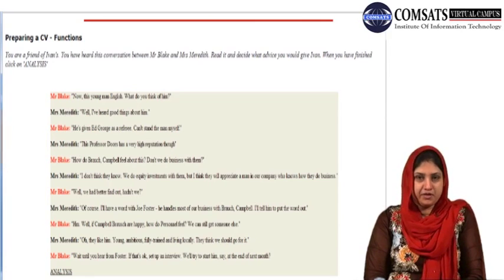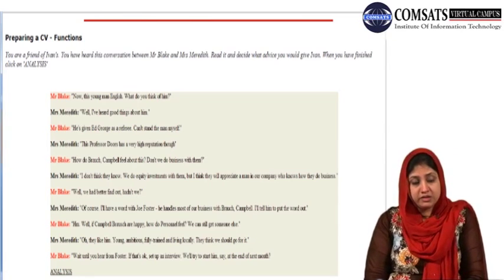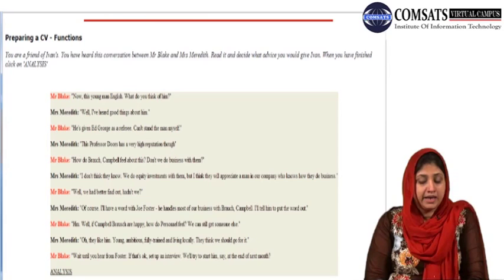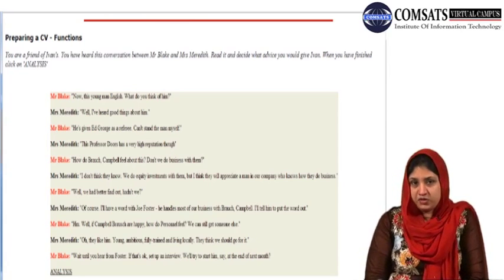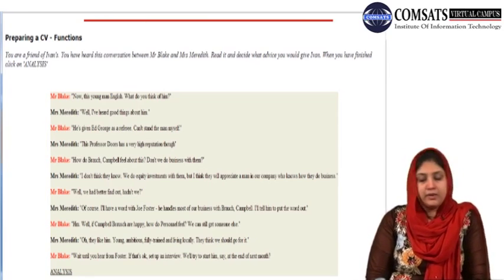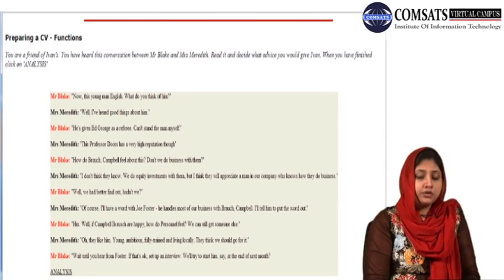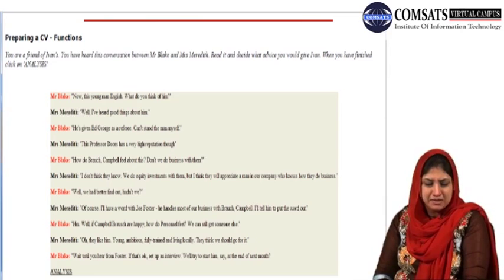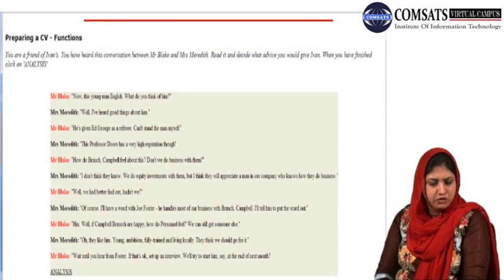Let's start our part three of the workshop for resume writing. We are dealing with the functions of CV. Your task is that you are a friend of Ivan's and you have heard this conversation between Mr. Blake and Mrs. Murdeth. Read it and describe what advice you would give Ivan. There are two characters. Let's go through the conversation first. Mr. Blake: Now this young man English, what do you think of him? Mrs. Murdeth: Well, I've heard good things about him. Mr. Blake: He's given Ed George as a reference. Can't stand the man myself. Mrs. Murdeth: This Professor Doors has a very high reputation though. How do Borsch Cumble feel about this? Don't we do business with them?